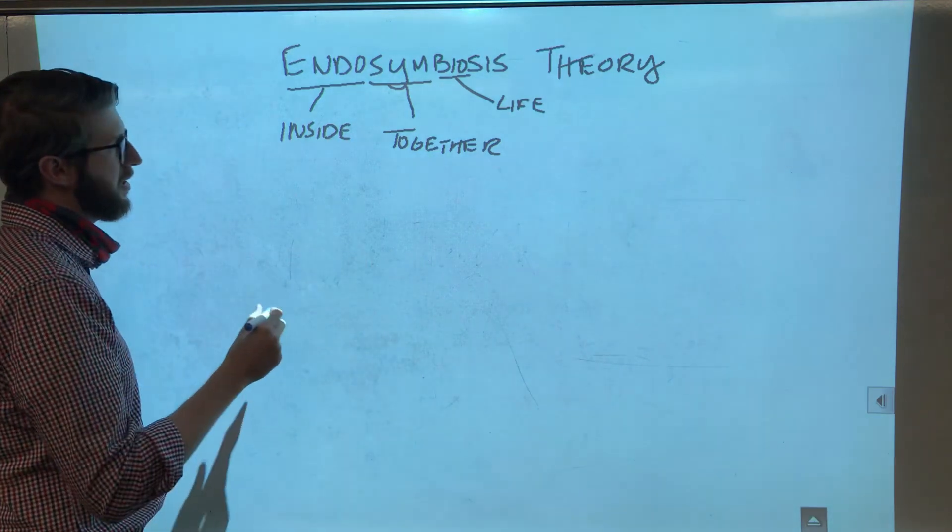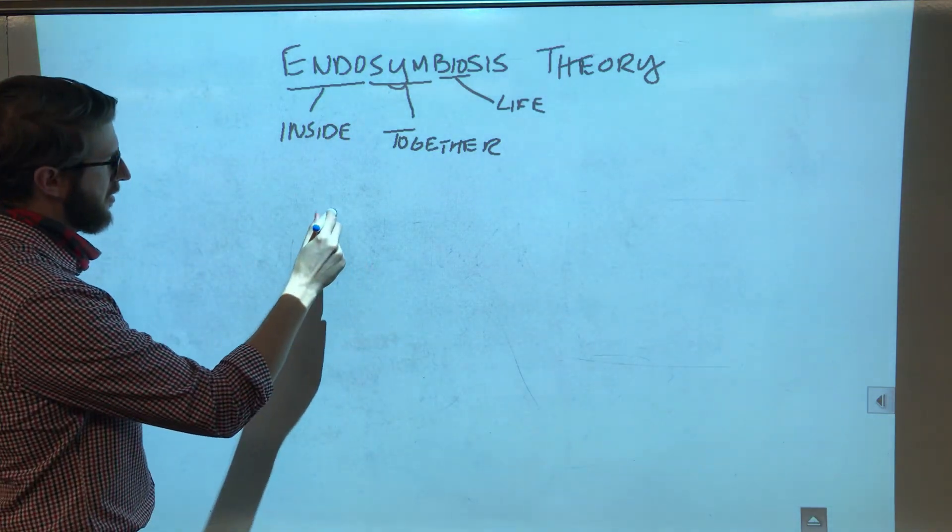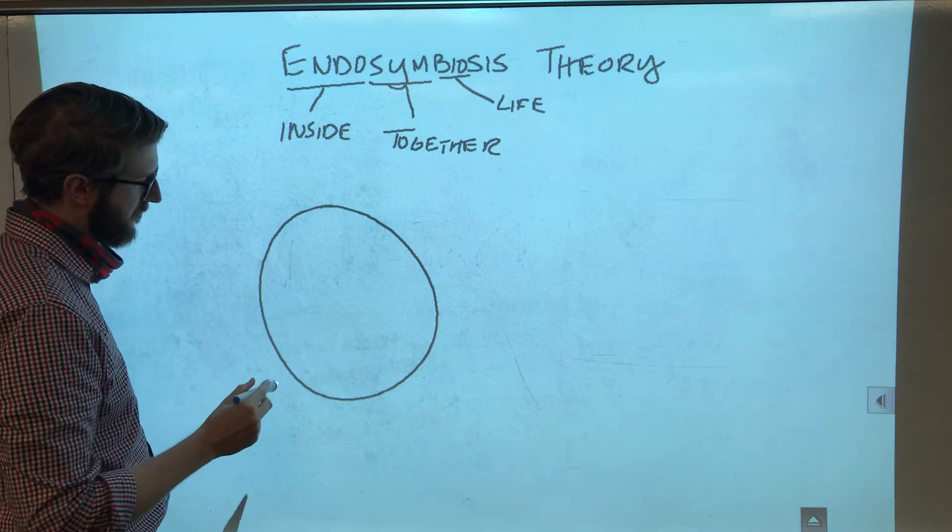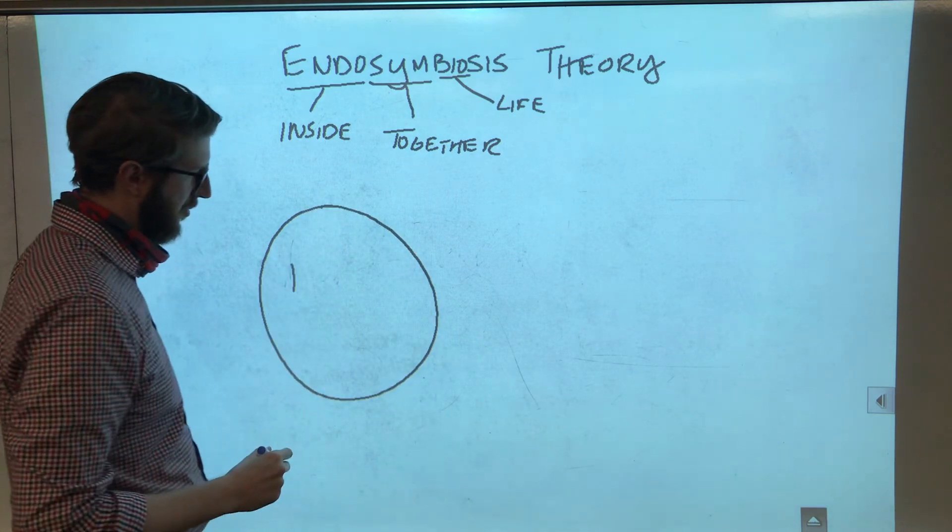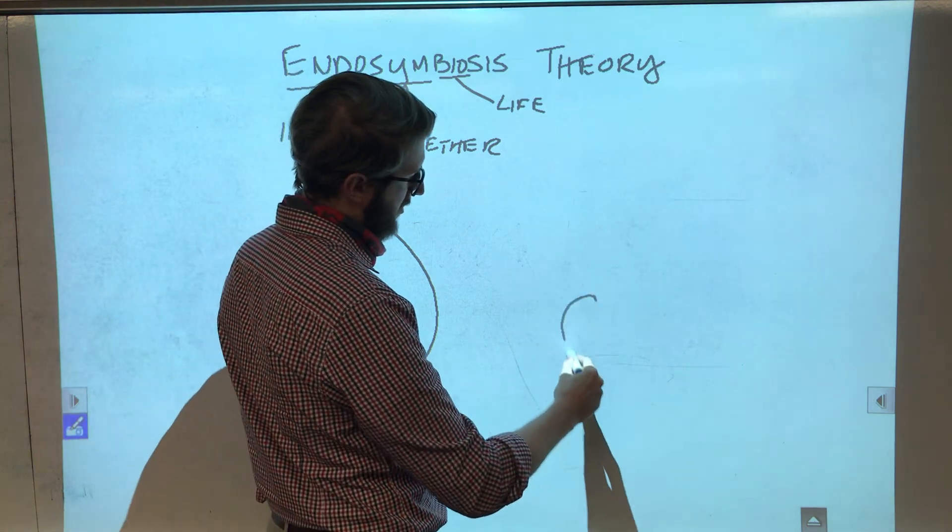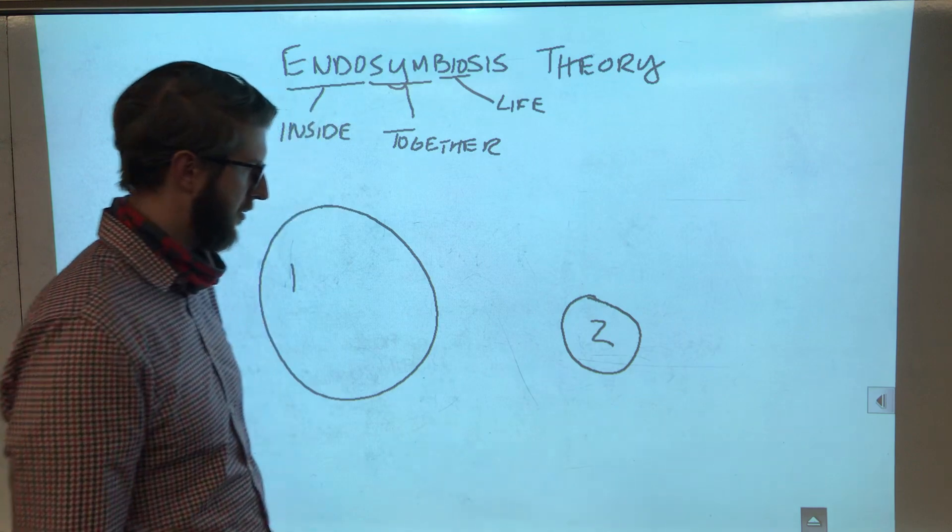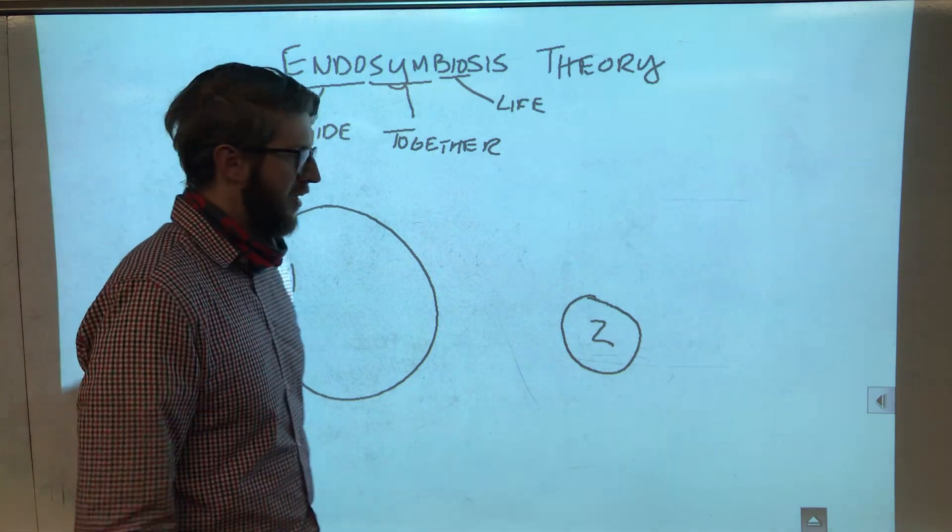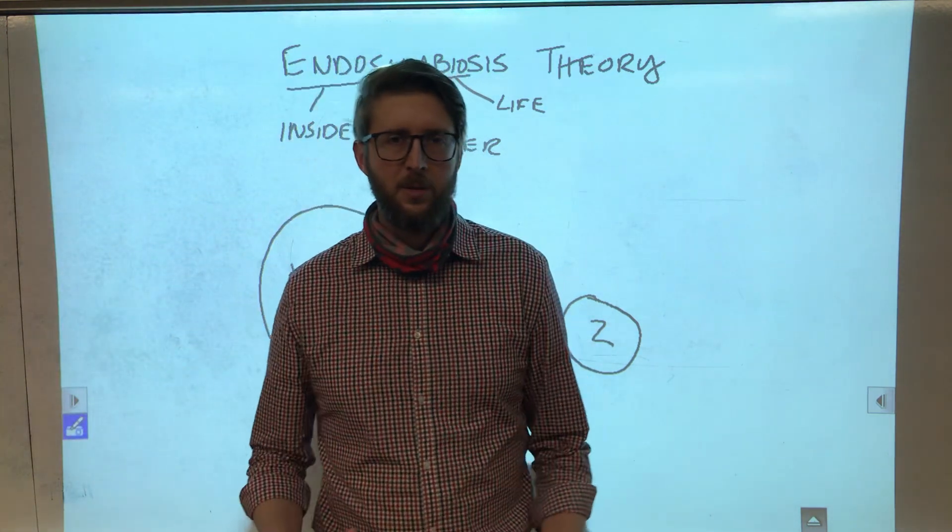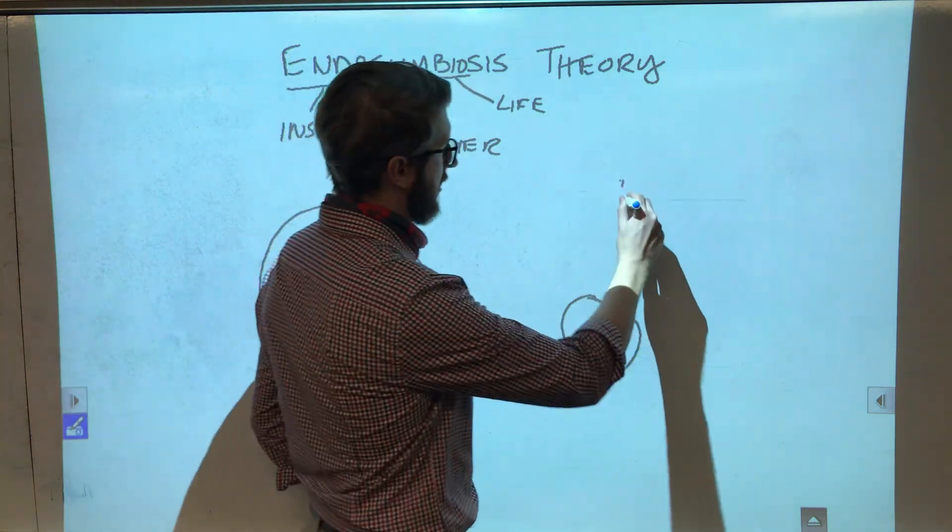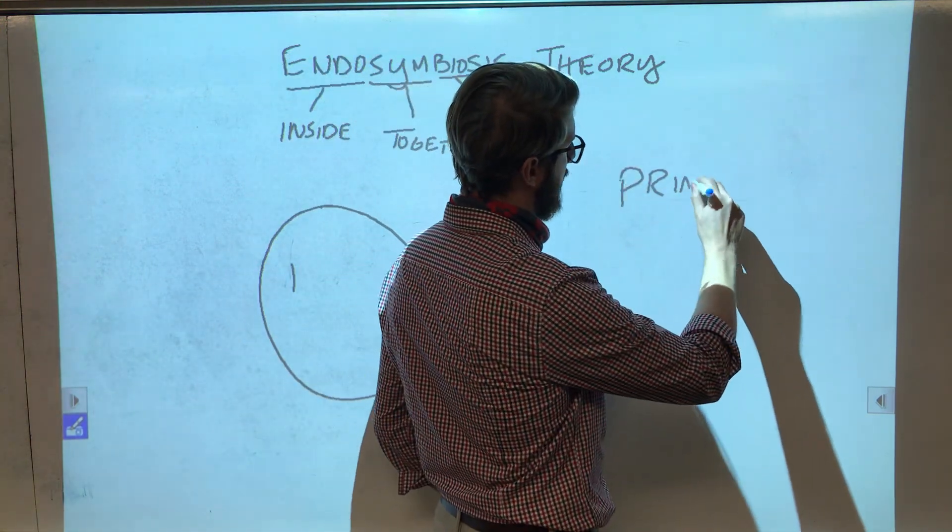So, the theory states that you have a big cell, and let's call this big cell one, and then you have a smaller cell, let's call this smaller cell two. Now, in the early Earth, in what we call the primordial soup, I'll go ahead and write that down.